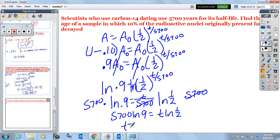Or t, in the end, will be 5,700 times the natural log of 0.9 divided by the natural log, we'll call it 0.5 to keep the decimals the same. And then, in simplifying this out in the calculator, we roughly get about 866.